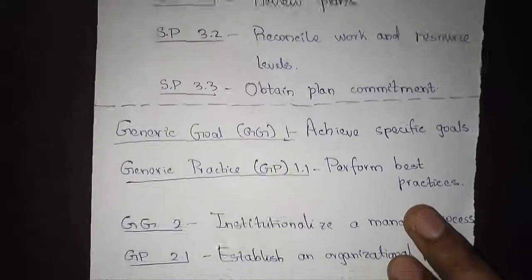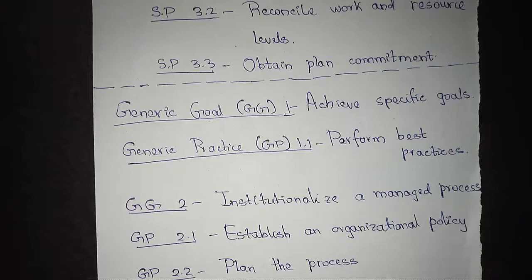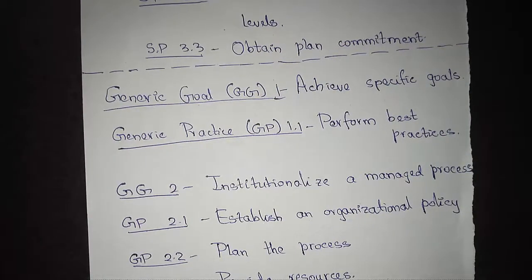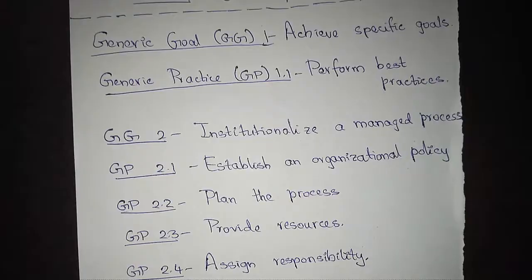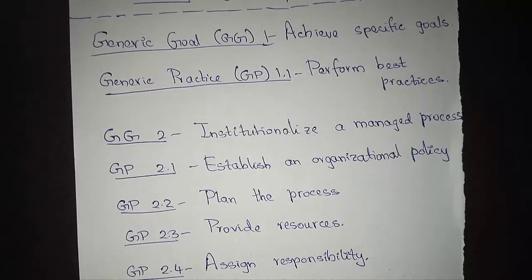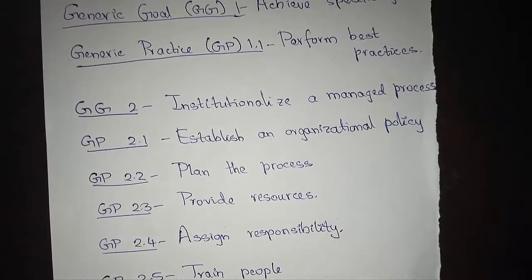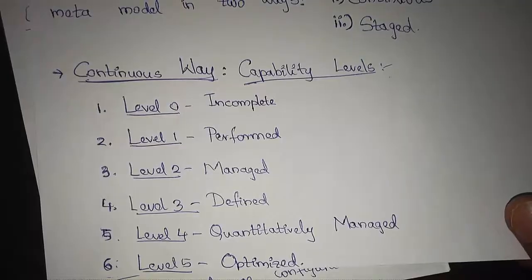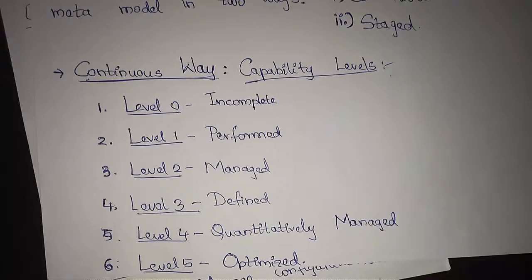In addition to specific goals and practices, CMMI as a continuous model also defines five generic goals and practices. Just as specific practices are used to attain specific goals, generic practices are used to attain generic goals. Generic Goal 1 is to achieve all the specific goals — this is the main criteria before moving on to generic goals to measure the process area. Generic Goal 2 is to institutionalize a managed process, meaning we institutionalize each capability level at an organizational level and manage them.